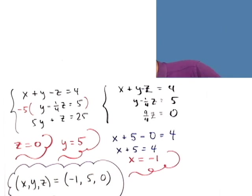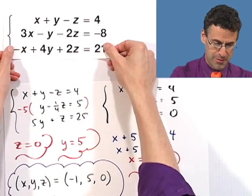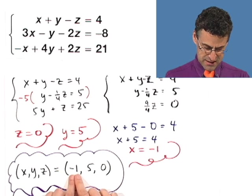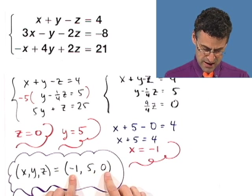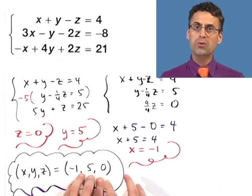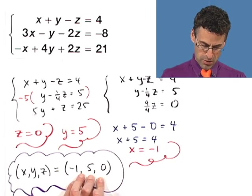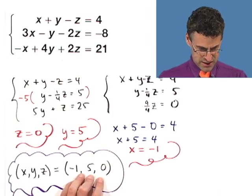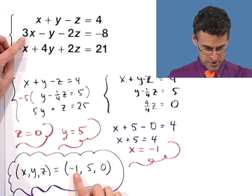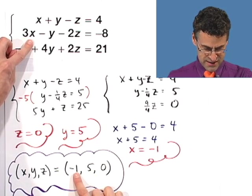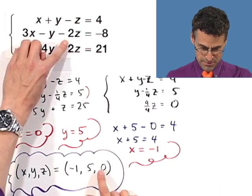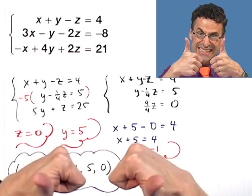So if you go back to this original system, remember how scary that was? And we do all the work we did. You see that x equaling negative 1, y equaling 5, and z equaling 0 are the only numbers, the only triple that will actually satisfy each and every one of these. Just for fun, let's just try the middle one. So put a negative 1 in for x, that's negative 3. Negative 3 minus 5, that's negative 8, minus 0 is negative 8. Yes! Awesome.